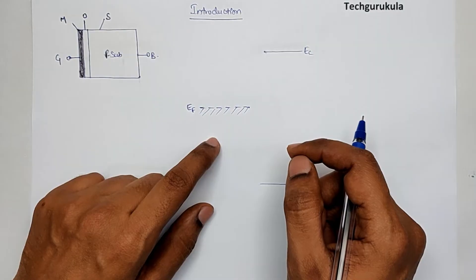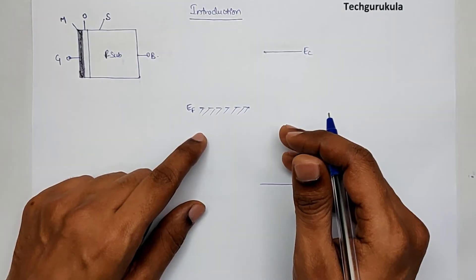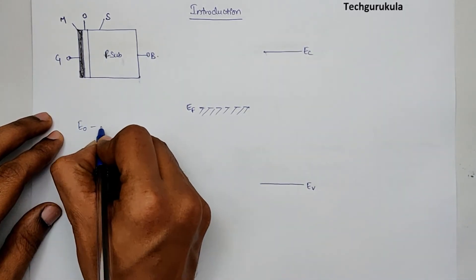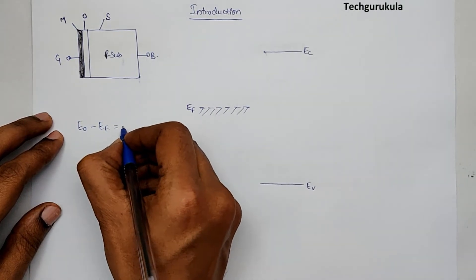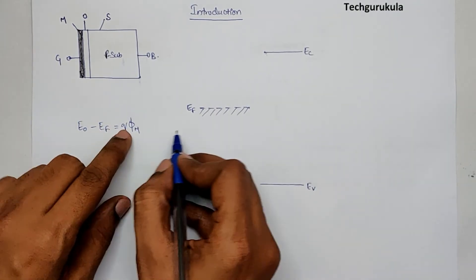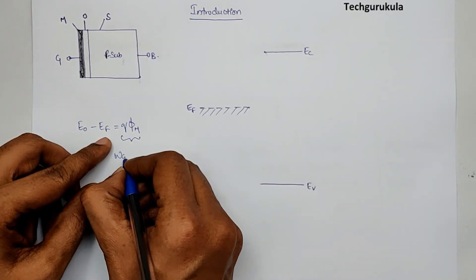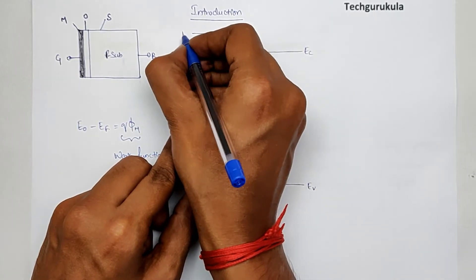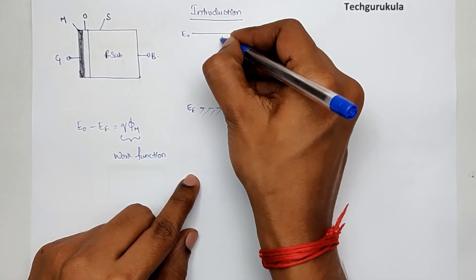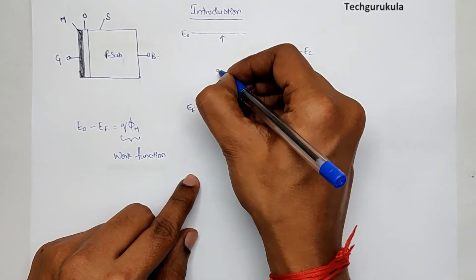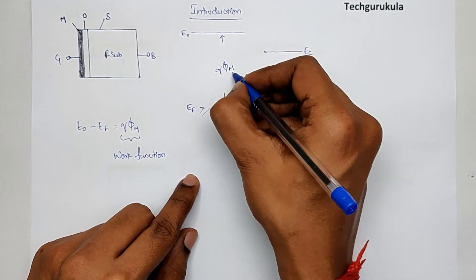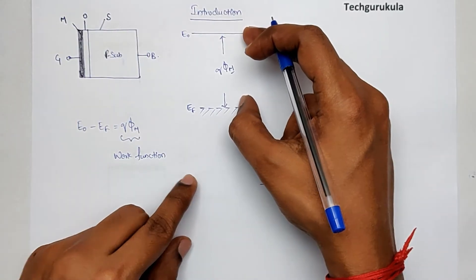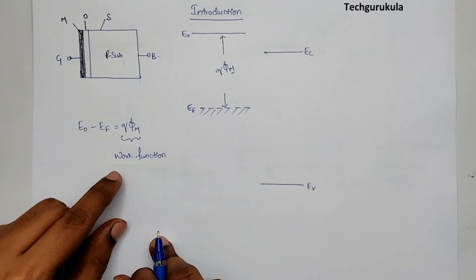There are concepts related to the difference between the vacuum energy level and EF. This difference is given by Q times φM, called the work function of the metal. So the vacuum energy level E0 minus EF equals Q×φM — this is the work function of metal.